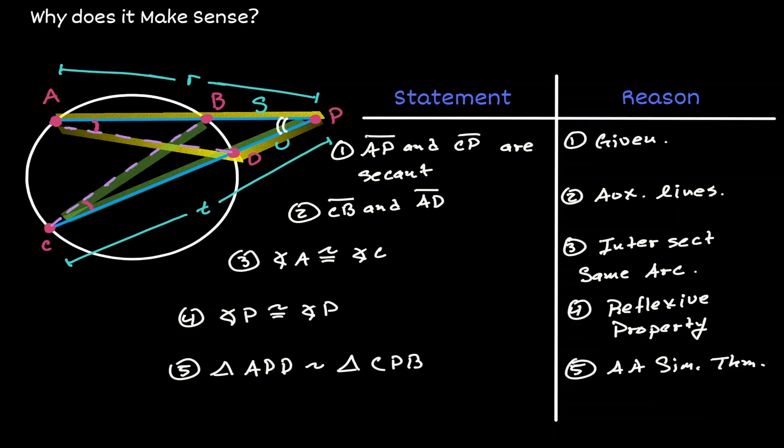Now we can claim that the sides are in proportion. If we get line segment R and divide it by line segment T, which are the lengths of the whole secant in its own individual triangle, that is going to be equal to U divided by S, which are the exterior segments in its own individual triangle.